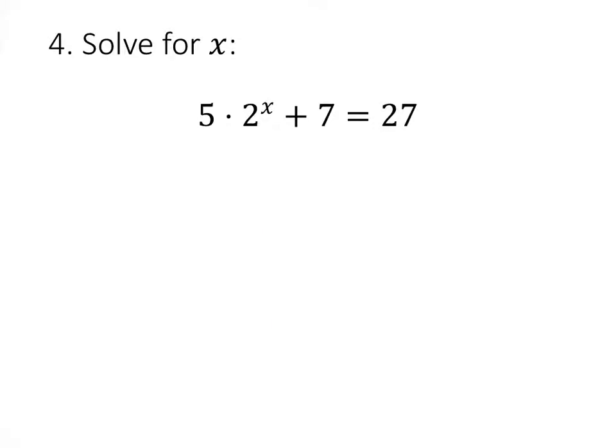For an equation like this, the exponential term is not by itself. And the trick of making the bases be equal only works if we only have a single exponential term all by itself, which means the first thing we need to do is get rid of all this extra stuff on the left-hand side. So we're going to start by subtracting 7 from both sides, and then dividing both sides by 5. And now, if we rewrite 4 as 2 squared, we see that these two exponents, x and 2, must be equal to each other. So x has to equal 2.